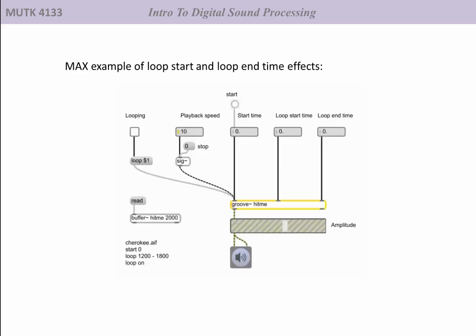And with no loop points set, if we play the file, what we hear is 2 seconds of Cherokee speech. Now, if I set loop points of, say, 1,200 start time and 1,800 end time, I want to turn looping on and press start.